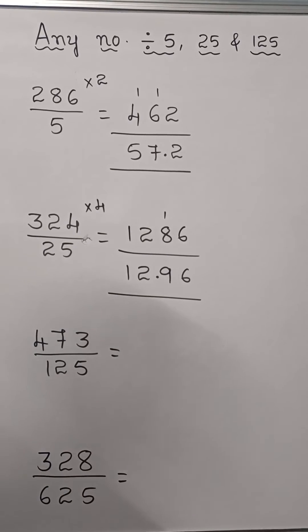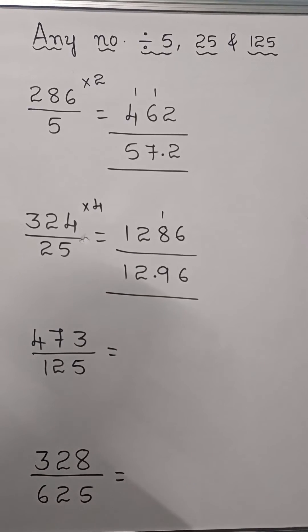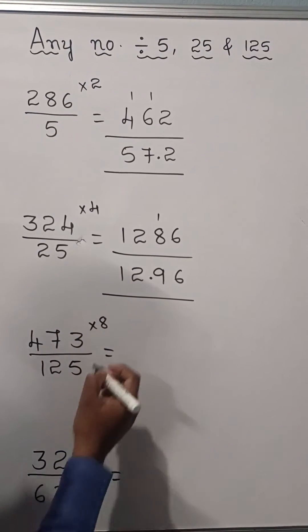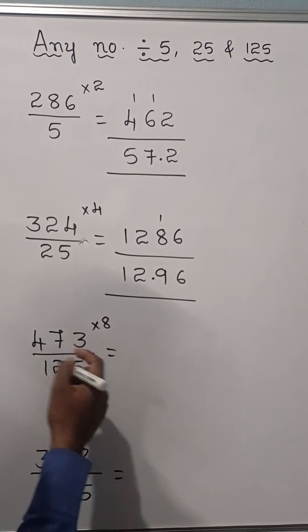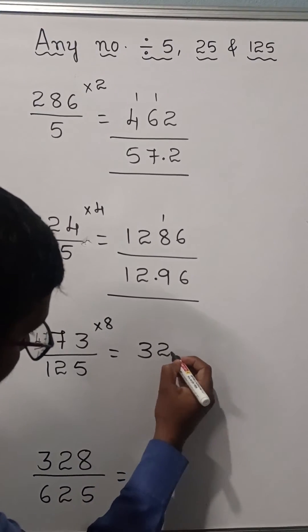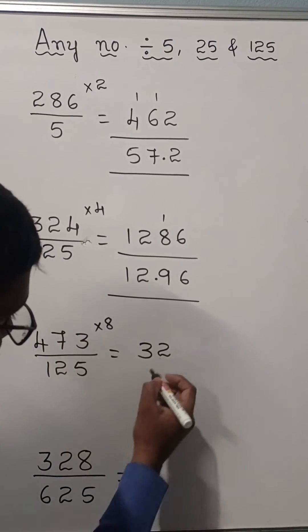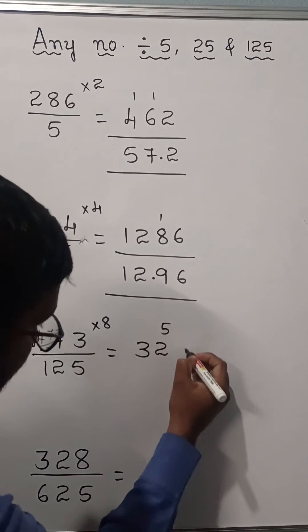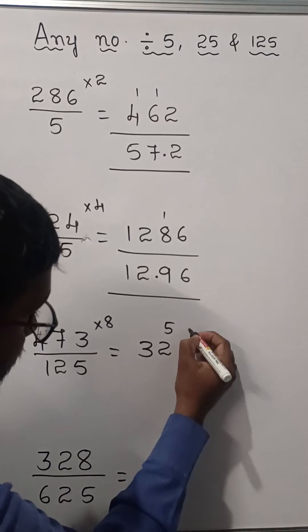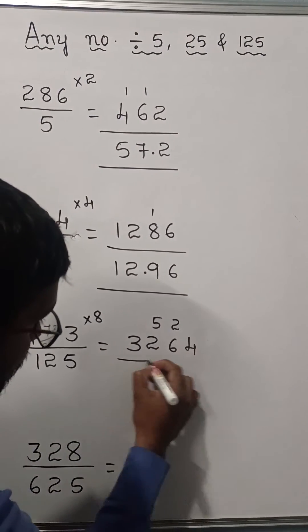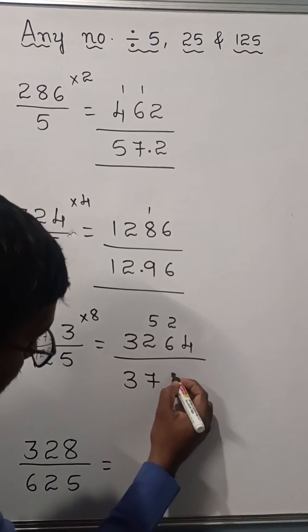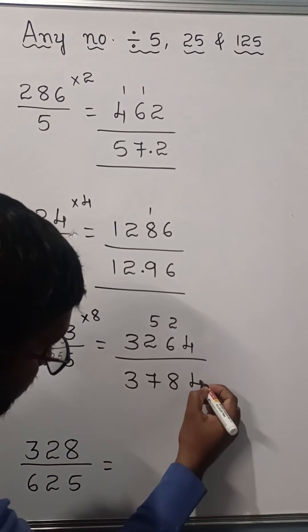473 divided by 125 means multiply the number by 8. 8 times 4 is 32. 8 times 7 is 56. 8 times 3 is 24. So the answer is 3784.